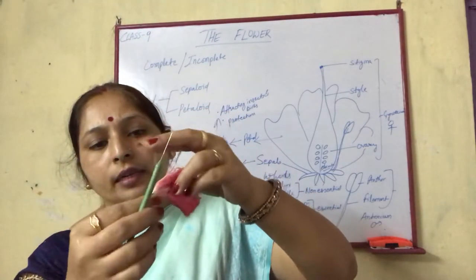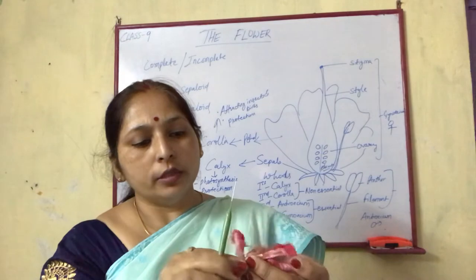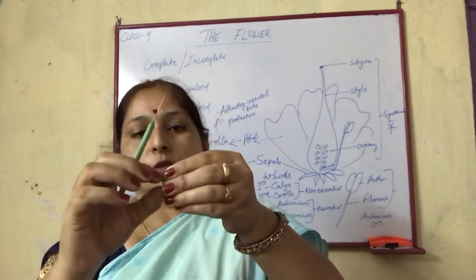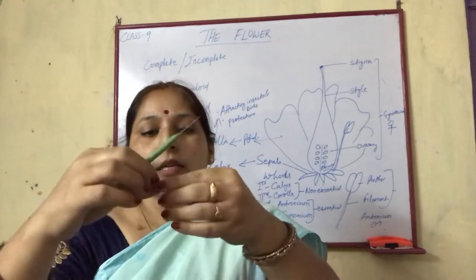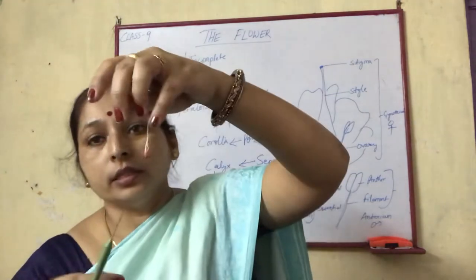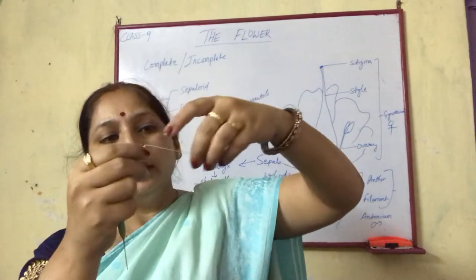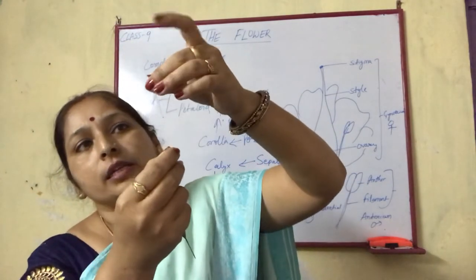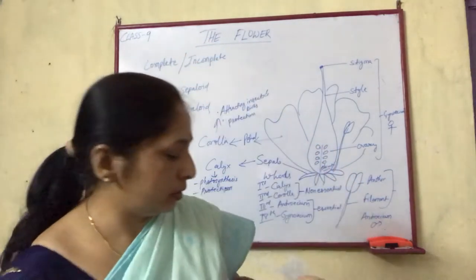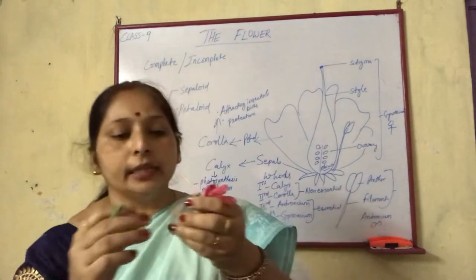The long slender tubule is the style, and it ends into a swollen base which is the ovary. After removal of the non-essential whorls, you can see the swollen base at the end. This swollen base is the ovary. So we have stigma, style, and the swollen base which is the ovary — these are the floral details of the gynoecium.